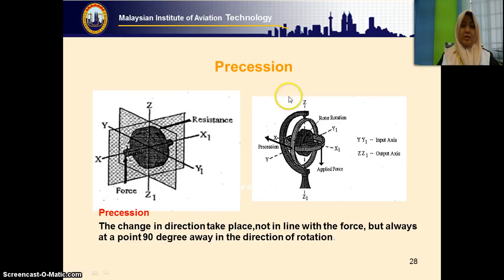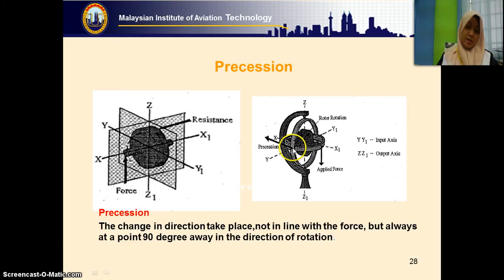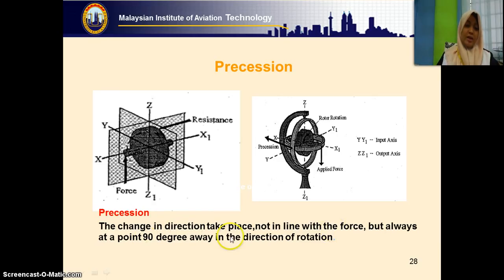Precession can also occur on the gimbal, not only at the rotor side but also at the gimbal. If we apply force to the inner gimbal, 90 degrees from that, the outer gimbal is the one that precesses. So if we apply force here, 90 degrees to this point is where the change in direction occurs — not in line with the force, but always 90 degrees away in the direction of rotation.